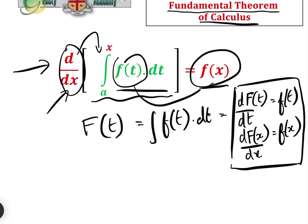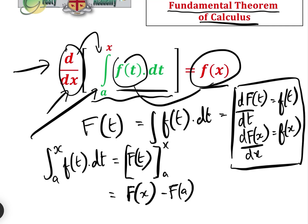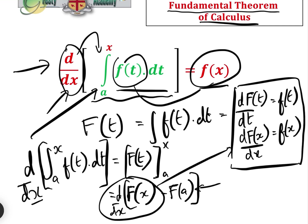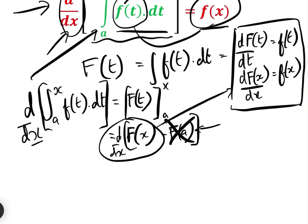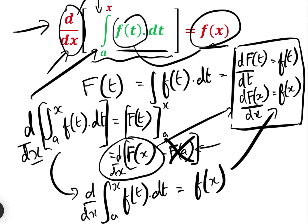Let's keep those two results for now. The integral between a and x of f(t) dt equals F(t) evaluated between a and x — that's just basic integration — which equals F(x) minus F(a). Now F(a) is a constant because a is a constant. So if we take the differential of this with respect to x, that's the same as taking the differential of F(x) minus F(a) with respect to x. We know that dF(x)/dx is f(x), and the differential of a constant is zero. So d/dx of the integral between a and x of f(t) dt equals f(x). That is the derivation of that formula.